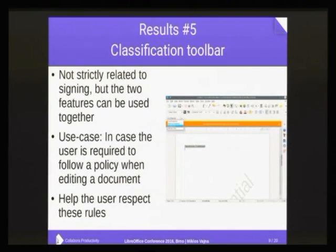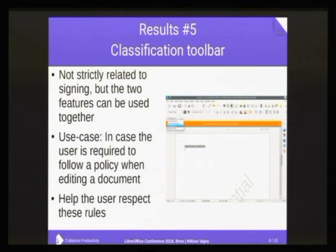Once all the signature description and OXML import and export was done, the next thing is slightly unrelated to the actual signing: a classification feature with the classification toolbar. We'll see in a minute how these connect together. One use case is that you're working in an organization and you have some long legal policy text you're supposed to follow. As a human being you probably don't understand that policy even if it's syntactically valid in your language. Wouldn't it be nice if LibreOffice would help you respect these rules? One solution is that there is an organization called TSCP.